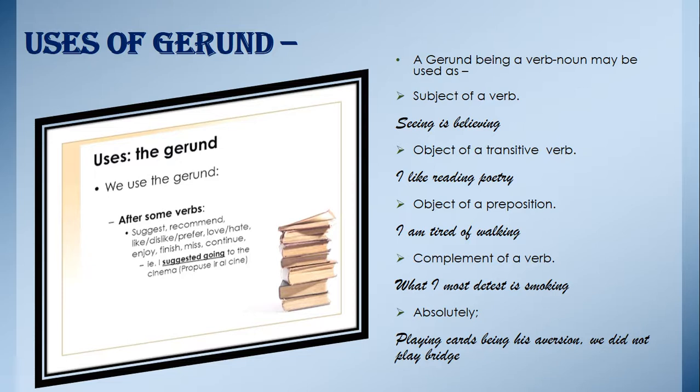Third, the gerund can be the object of a preposition. For example: 'I am tired of walking.' 'He is fond of swimming.' 'He was punished for telling a lie.' 'We were prevented from seeing the prisoner.' 'I have an aversion to fishing.' Fourth, it can be a complement of a verb. For example: 'What I most detest is smoking.' 'Seeing is believing.'